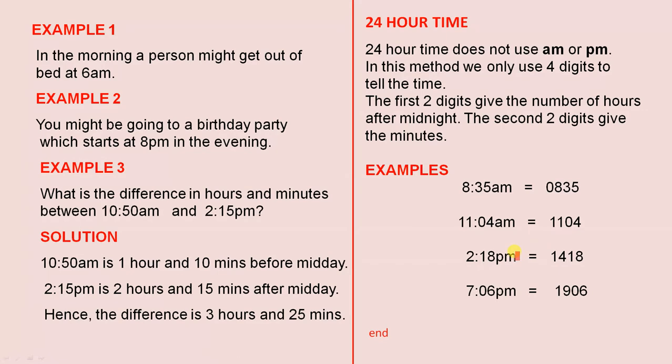When we are telling the time after midday, that's when it becomes interesting. 2:18 PM is 1418, because from midnight to midday is 12 hours. We add the 2, that gives us 14 hours. That means 14 hours after midnight.